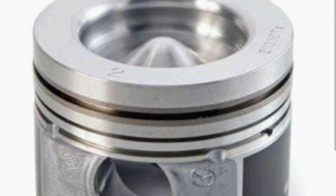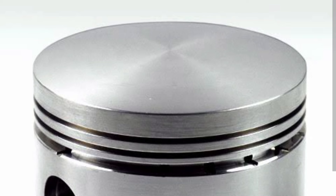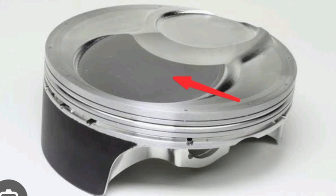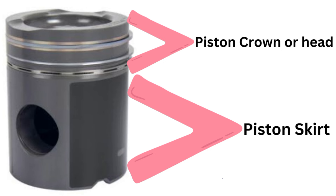There are different types of piston shapes. It can be a flat top, dome, or dish. This is a flat top piston. This is a dome piston. And this is a dish piston. You should also know the shape of the piston.